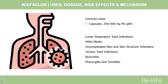Dose: The dose of this medicine will be different for different patients. Lower respiratory tract infections, including pneumonia, caused by Streptococcus pneumoniae, Haemophilus influenzae, and Streptococcus pyogenes: Capsules, 250 to 500 mg, PO Q8H.